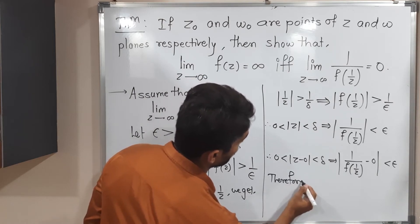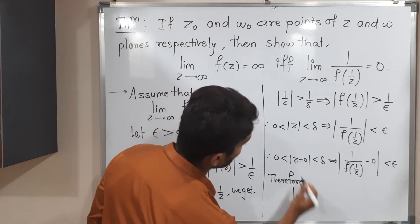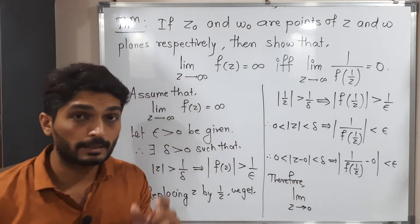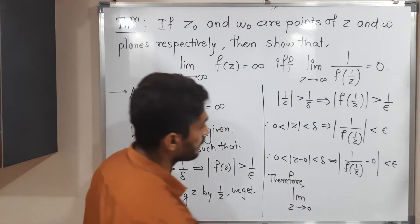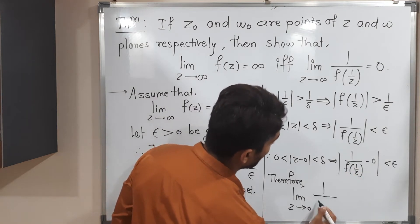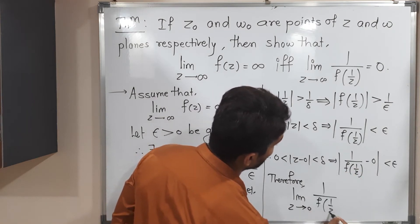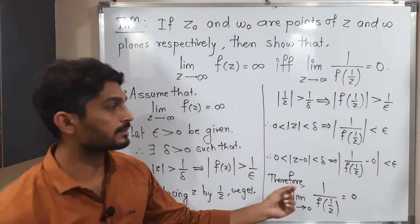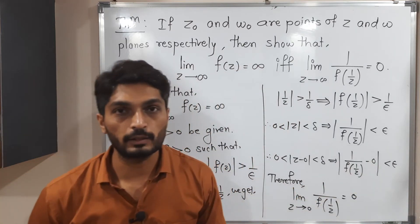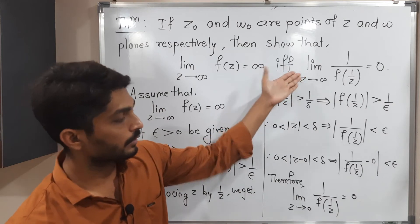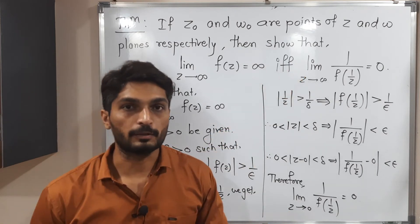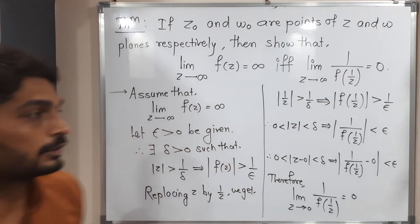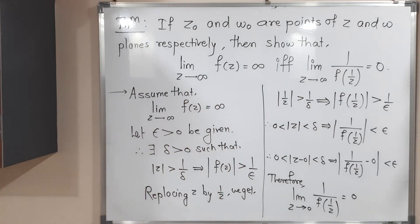Now we can write by definition of limit: the limit as z approaches 0 of 1/f(1/z) equals 0, since we have mod(z − 0) and the function 1/f(1/z) with limiting value 0. We have proved the first direction. Conversely, we assume the second part and prove the first part.